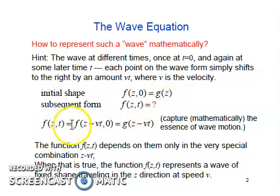So, f(z,t) equals f(z minus vt). The function f(z,t) depends on them only in a very special combination of z minus vt.